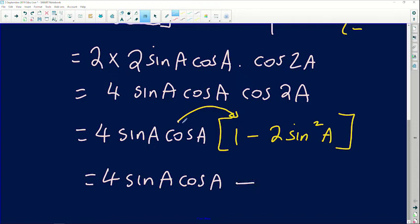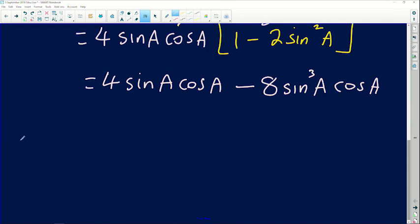Then you do 4 sin A cos A multiplied by negative 2 sin squared. So 4 by 2 will just give us 8. Sin A times sin squared A will give us sin cubed A with that cos A dragging there. It actually gives me 4 sin A cos A minus 8 sin cubed A cos A, which is exactly what we had to prove.